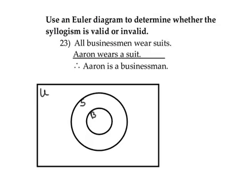In number 23, we're asked to use an Euler diagram to determine whether the syllogism is valid or invalid. We use Euler diagrams when we have quantifiers — all, some, none, or some are not. This particular problem has told us to use an Euler diagram, so we're going to go through the set of premises, draw the diagram, and then see if the conclusion necessarily follows from the given premises.